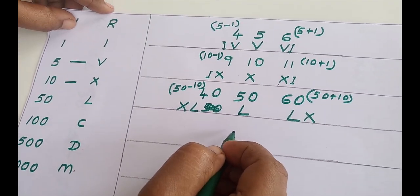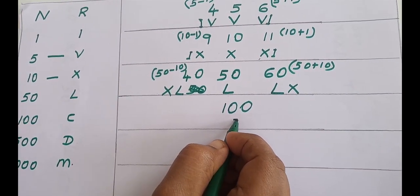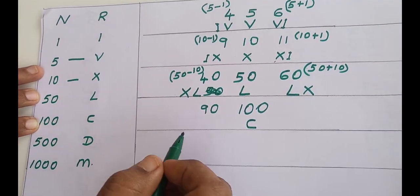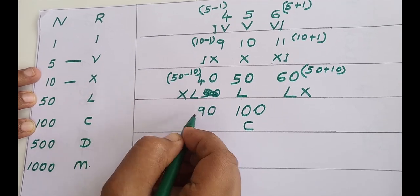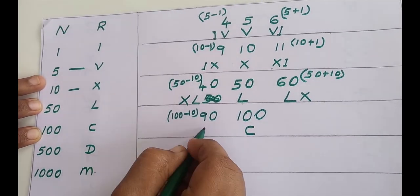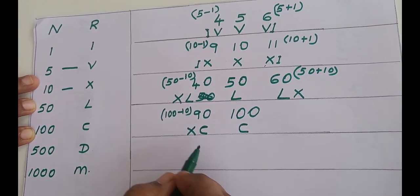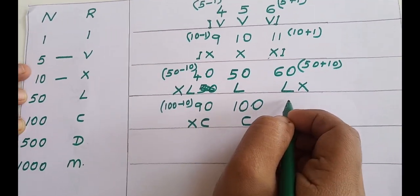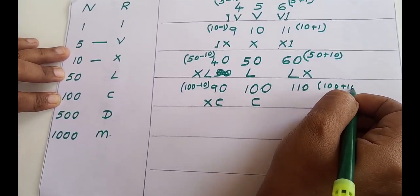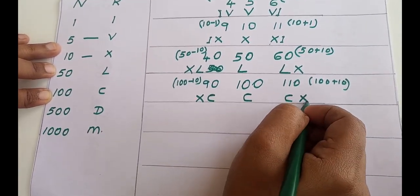How do we write 90? We know 100 is C. Since 90 is 100 minus 10, we write X before C — giving XC. For 110, which is 100 plus 10, we write X after C — giving CX.